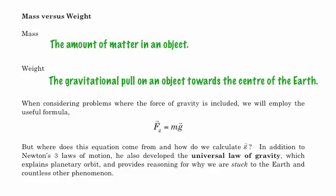When we consider problems where gravity is included, we're going to use a very useful formula that the force of gravity is equal to m times g. And what is g? G is really the acceleration due to gravity. G has different values on different planets. So if you're talking about the force of gravity on Mars, or the force of gravity on the Moon, g is different. On Earth, g is 9.8 meters per second squared.